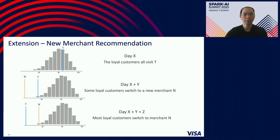This method can in fact be further extended to new merchant recommendation. We can keep tracking the loyal customers for merchant T. When a new merchant N appears and some of those loyal customers switch to merchant N, most of the loyal customers stop visiting T and keep listing N frequently. In this case, we can say the new merchant N is probably better than the old merchant T. So now we can recommend the new merchant N to other customers.